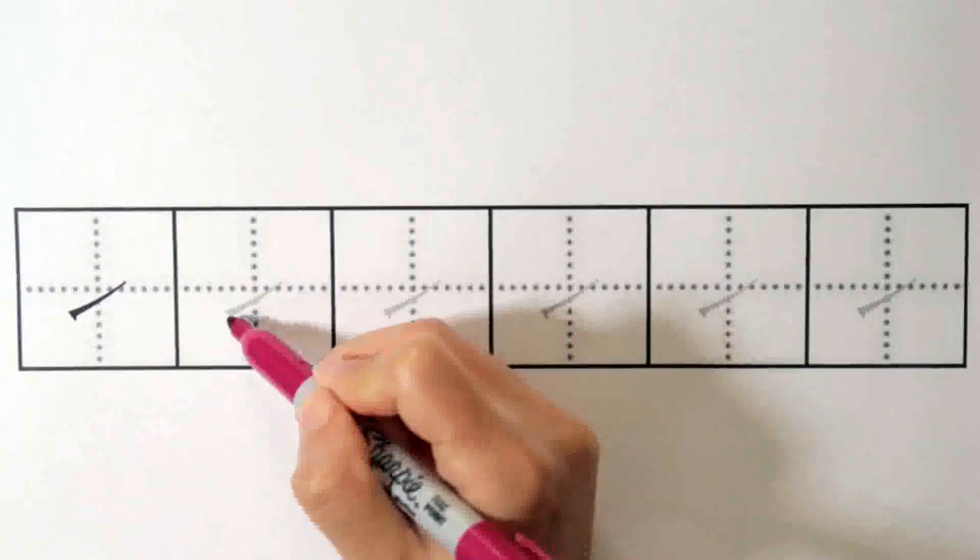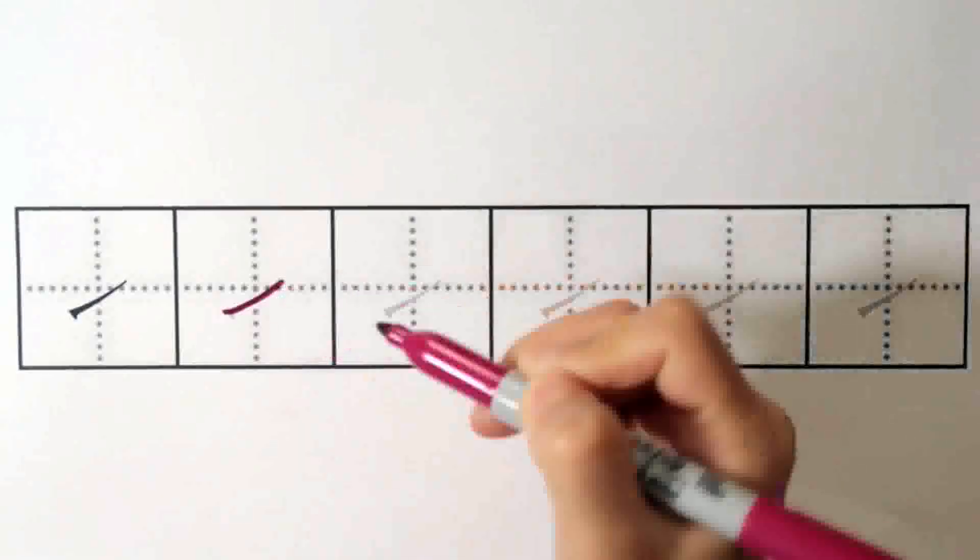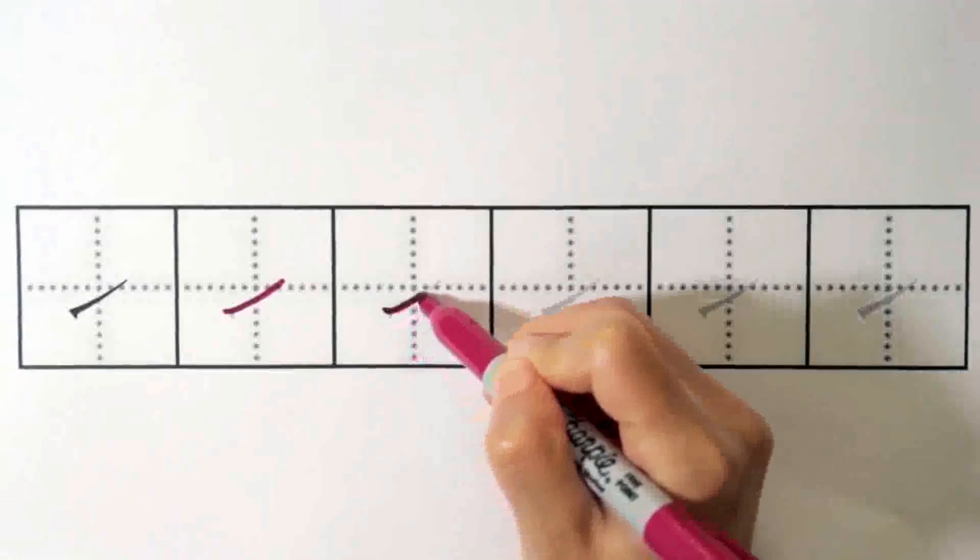The third stroke today is called ti, or upward. It looks like this. And it's written from the bottom left to top right.